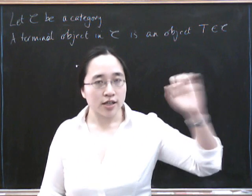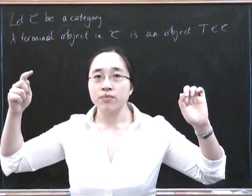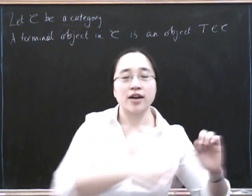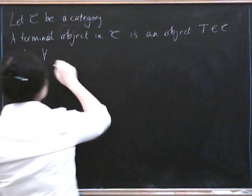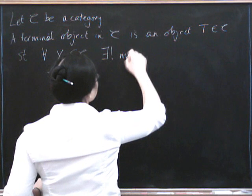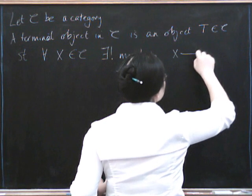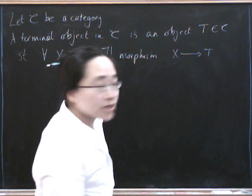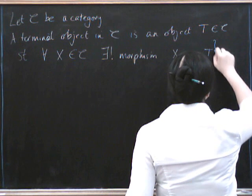Its universal property is here's your universal object and we're going to say that given any other object in the category there is a unique morphism to the terminal object. That's why it's called terminal. Everything kind of ends up there. So it's an object T such that for all X in C there exists a unique morphism from the other one to the terminal one. This part, the such that part is the universal property. So this is the universal property in blue.